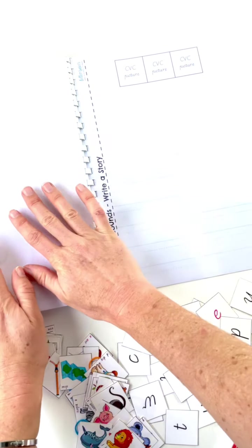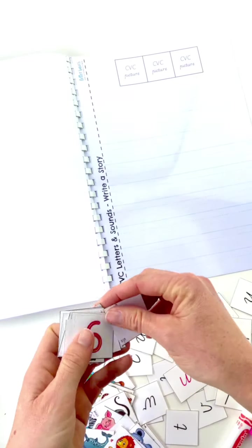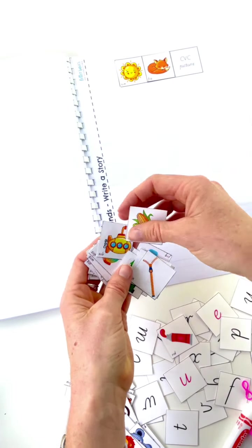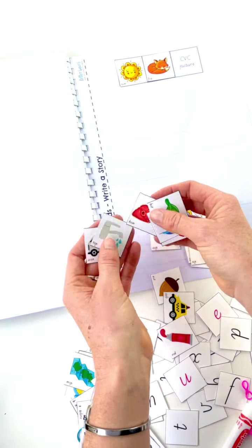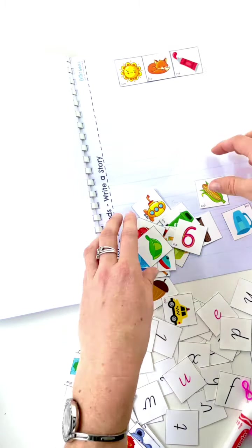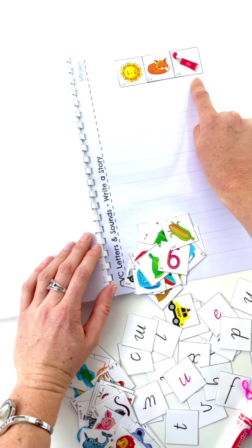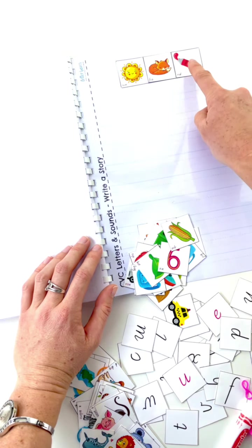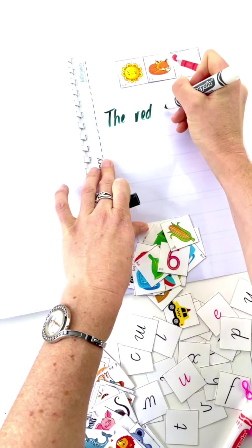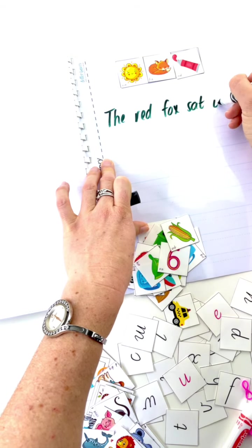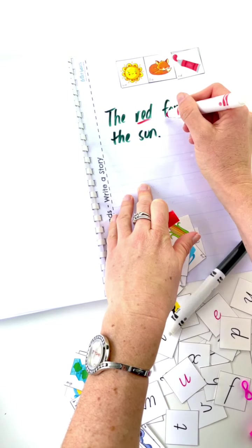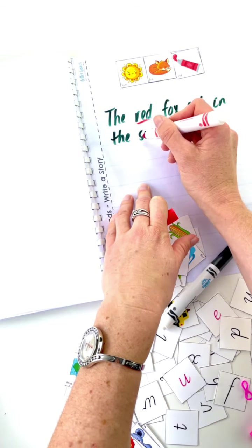And then you've got a chance to do a better job than me, if need be. And write your own story for this one. You choose three of our CVC words. So the red fox. So we've used these two already sat in the sun. So we've actually used four CVC words there. And the red fox sat in the sun. So let's do a full stop too. There we go.